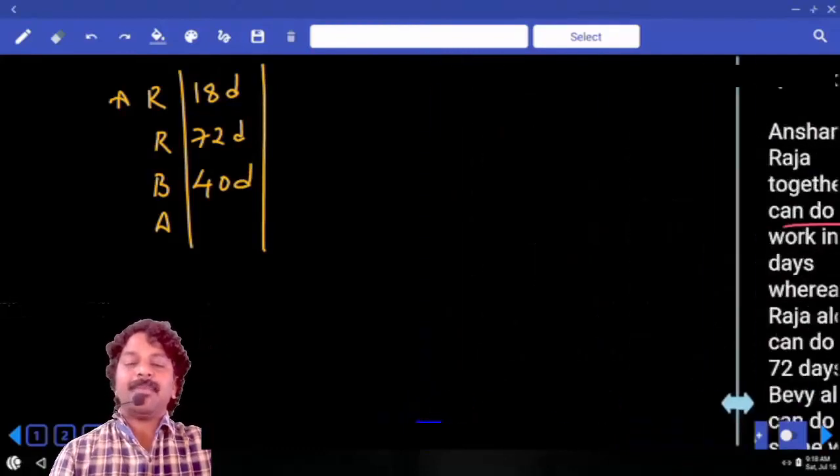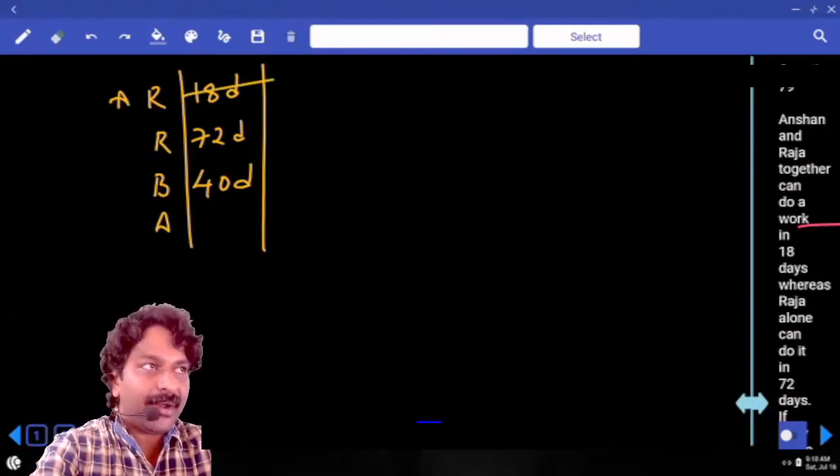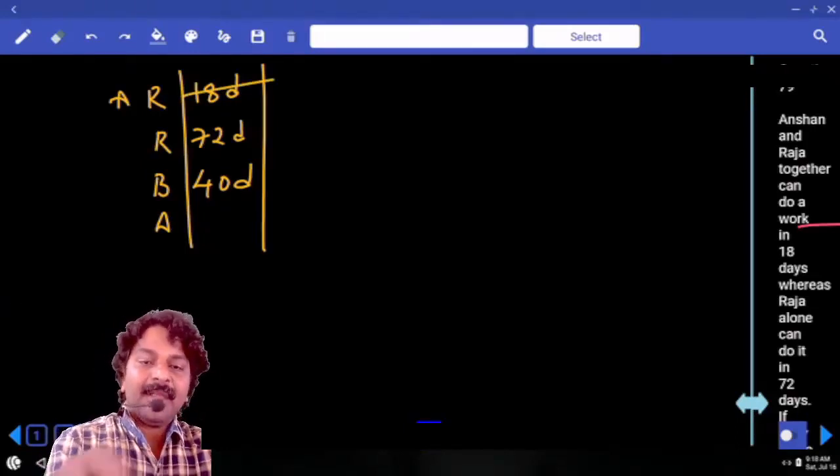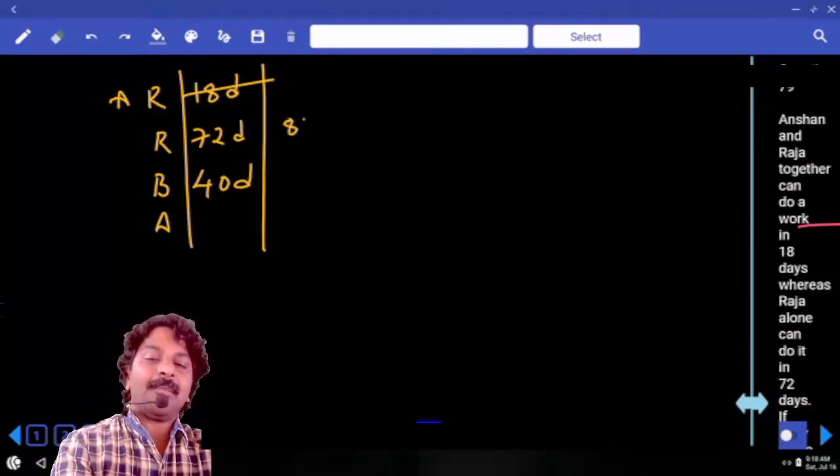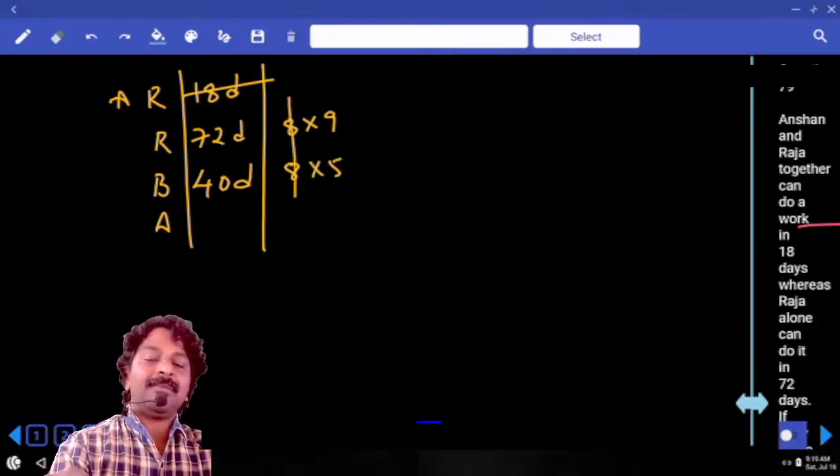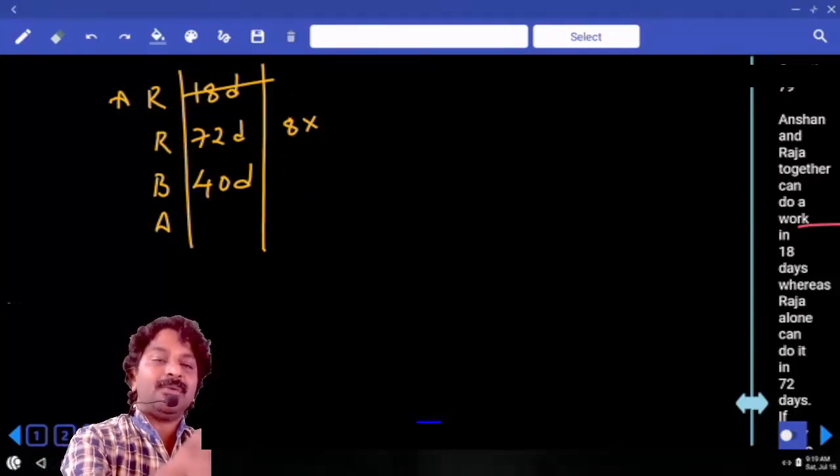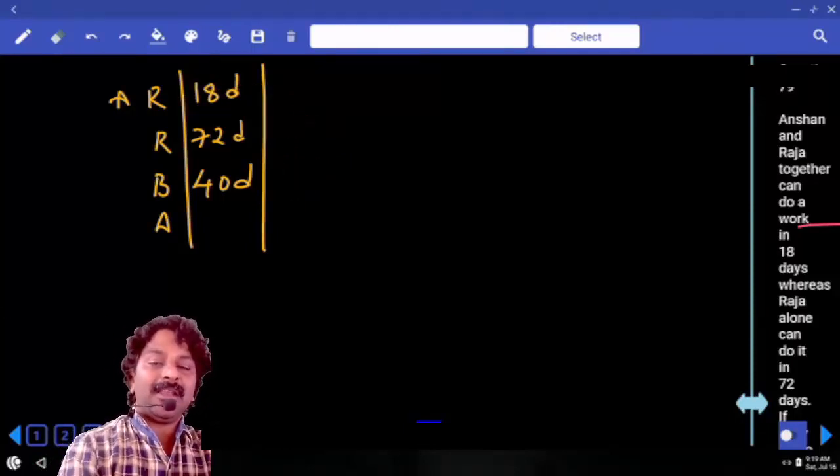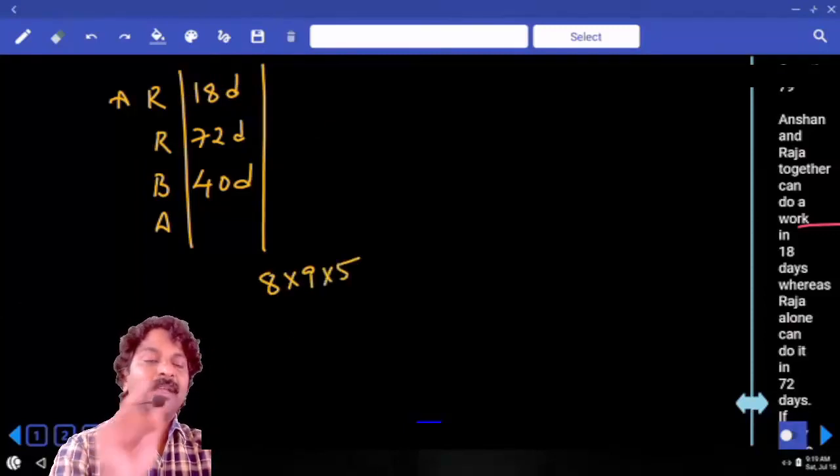Here, what exactly is the problem is identifying LCM. 18 is the factor of 72, so you do not have to worry about it. When you observe these two numbers, both are in multiples. When you take 8 common, 8, 9 times, 8, 5 times. 8 is common. Other numbers, 9 and 5. So, LCM is equal to, I do not want to calculate, 8 into 9 into 5.